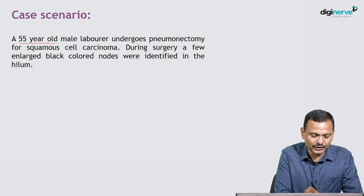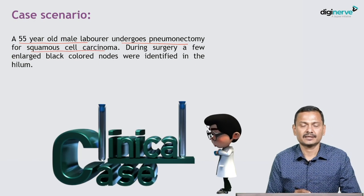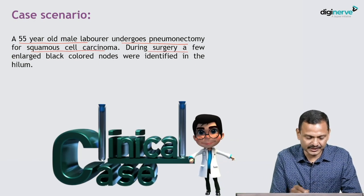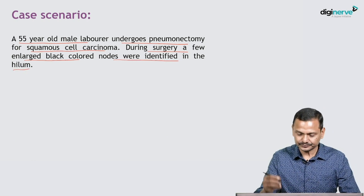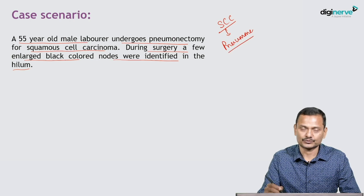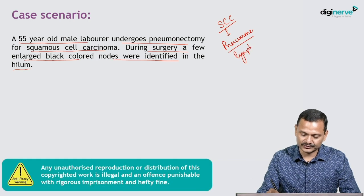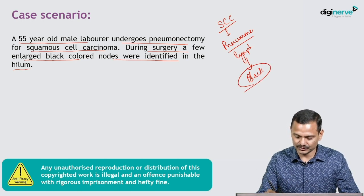Let's get on with our first case scenario. Here is a 55-year-old laborer who undergoes pneumonectomy because of squamous cell carcinoma. During surgery, a few black nodes were identified in the hilar region. The patient has SCC and undergoes pneumonectomy — one lung is removed along with the lymph nodes. Now, the lymph nodes are black in color. This black color could possibly be because of some pigment.